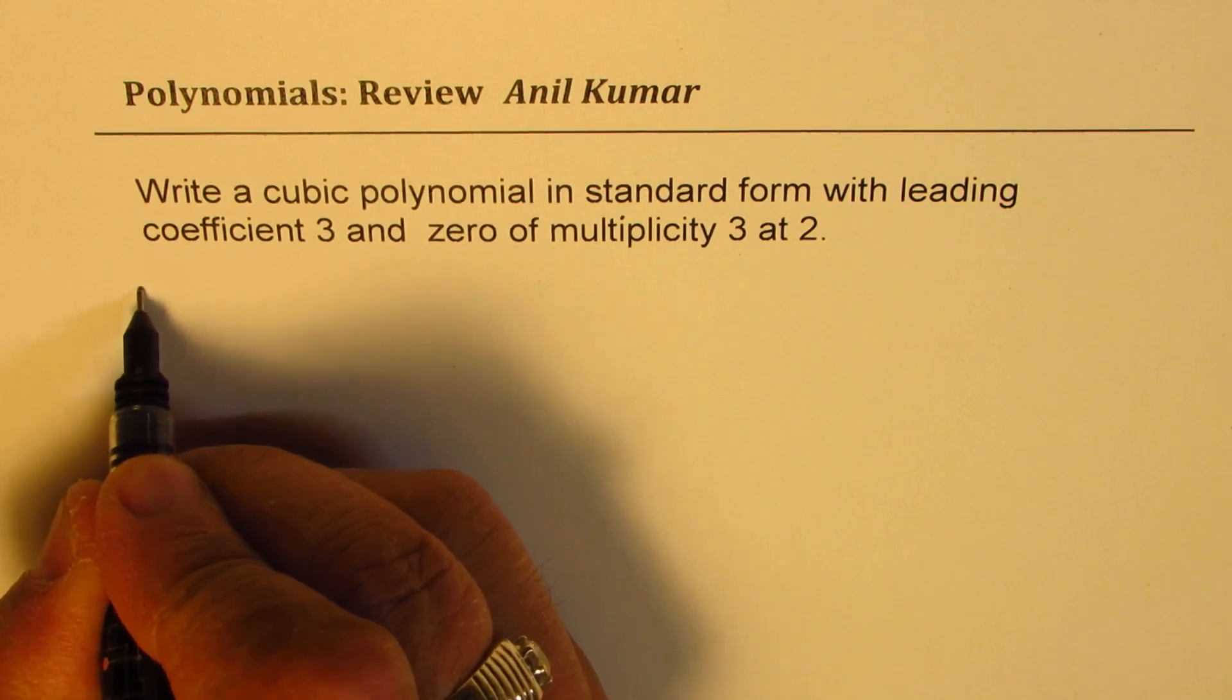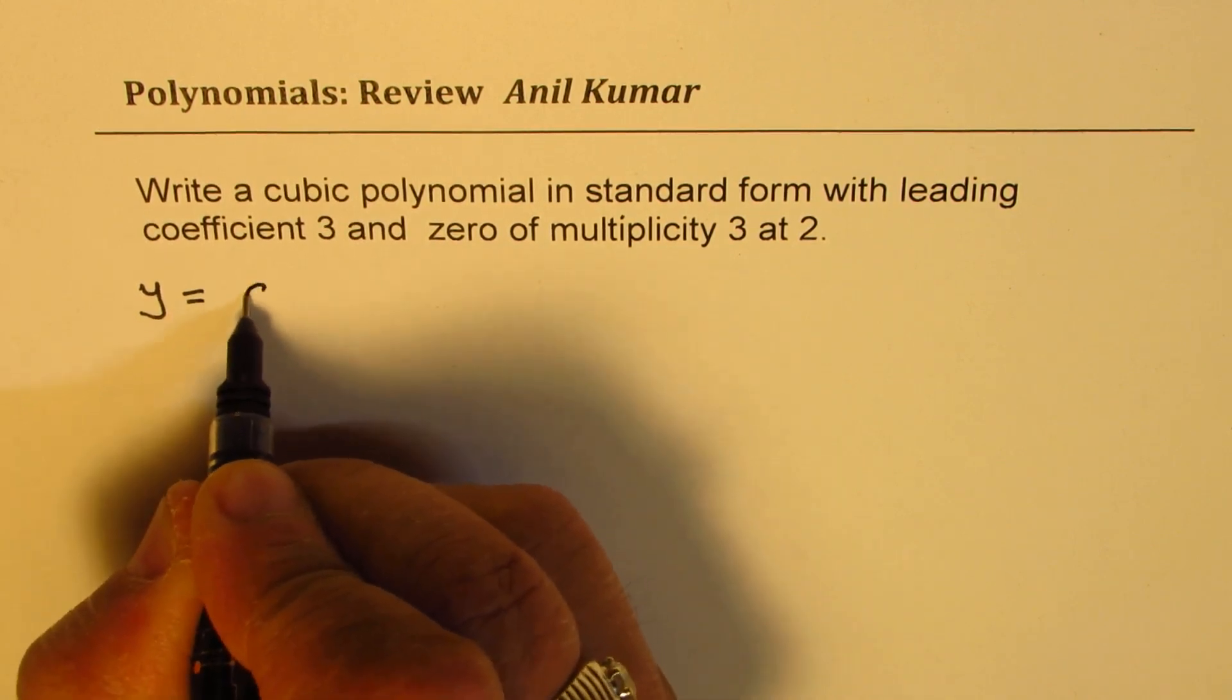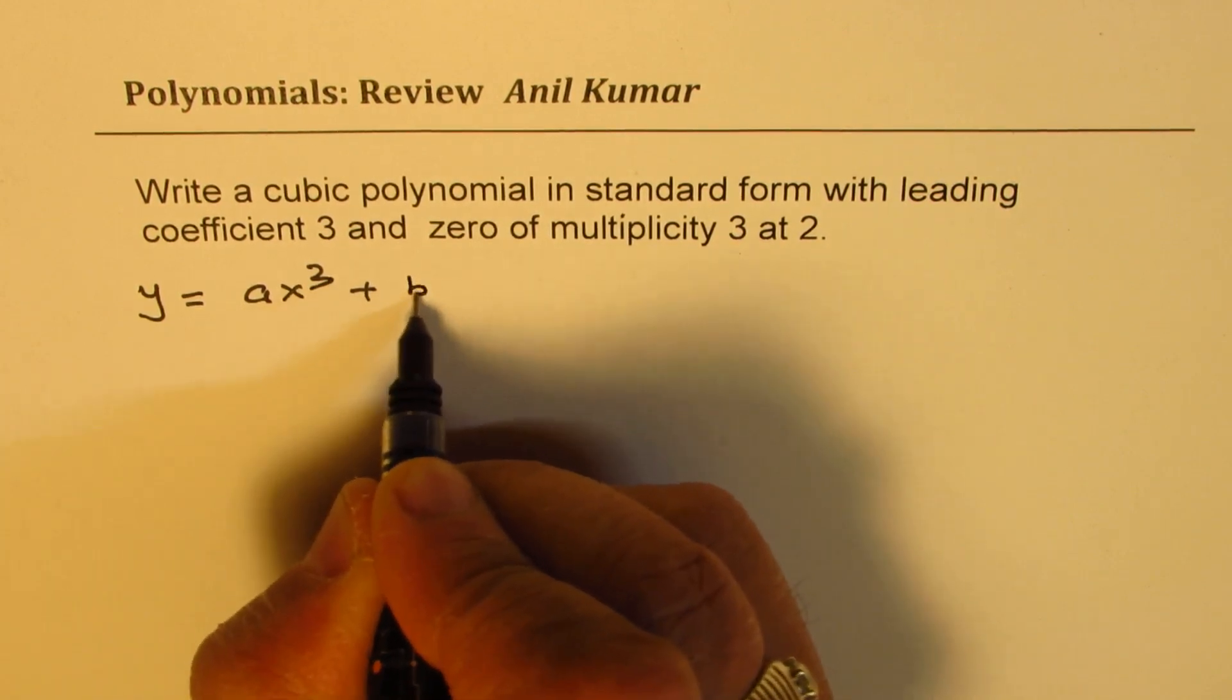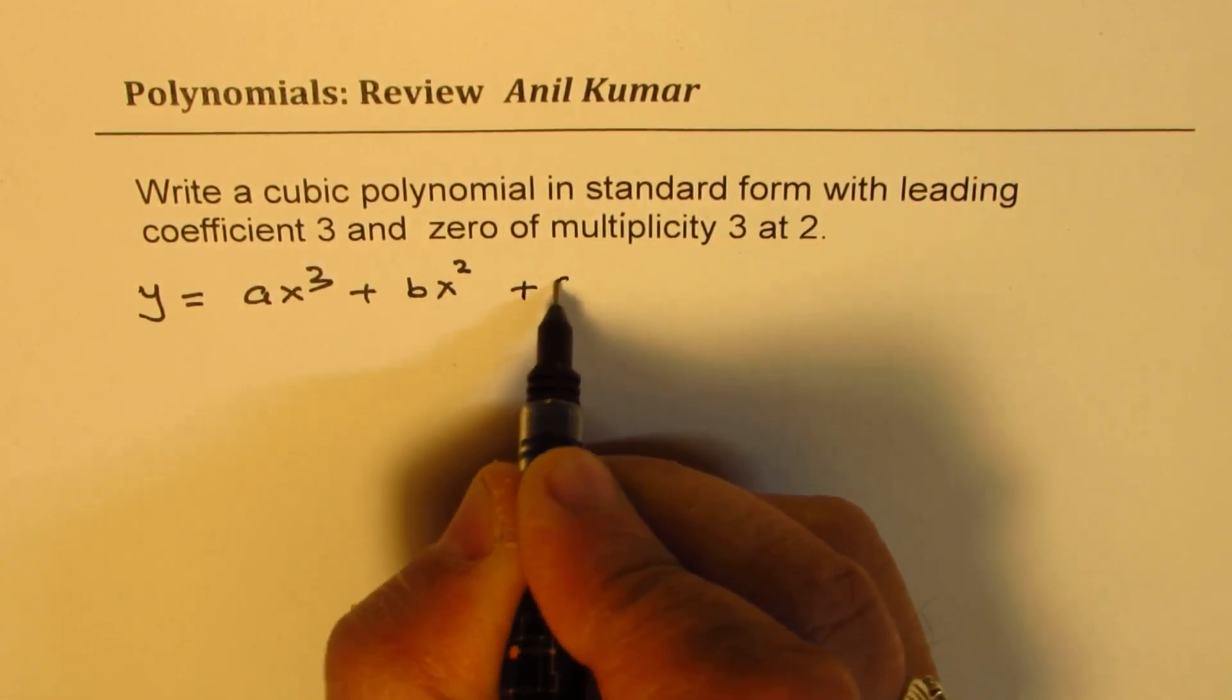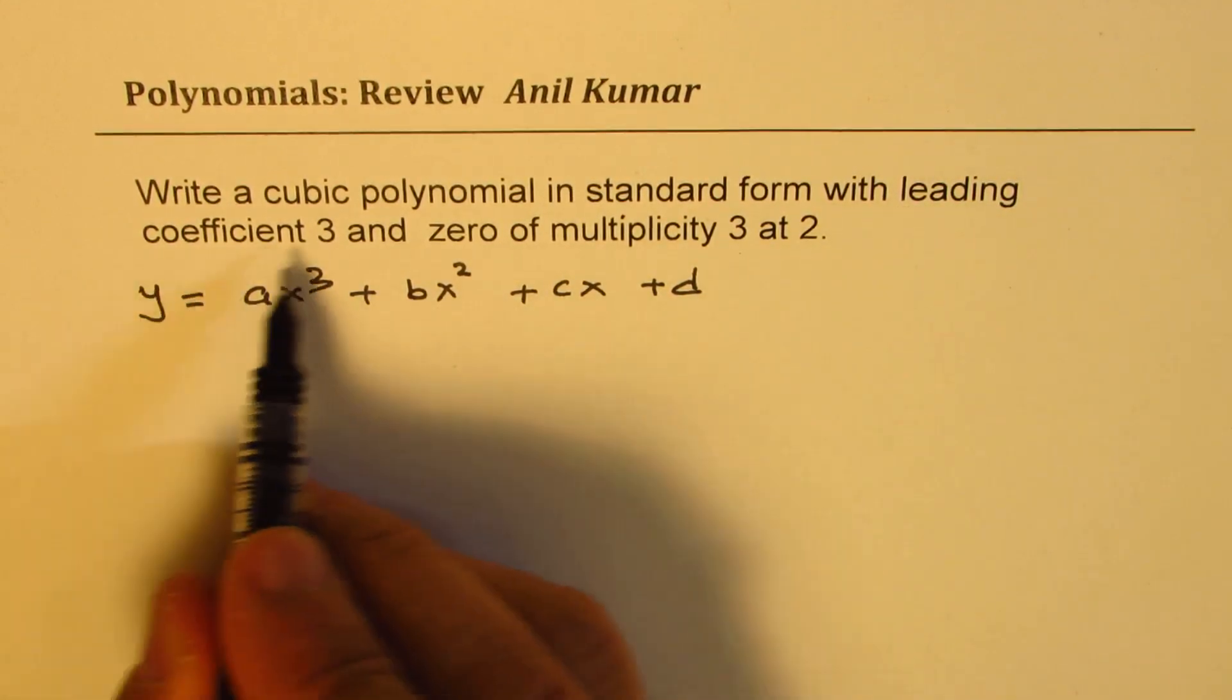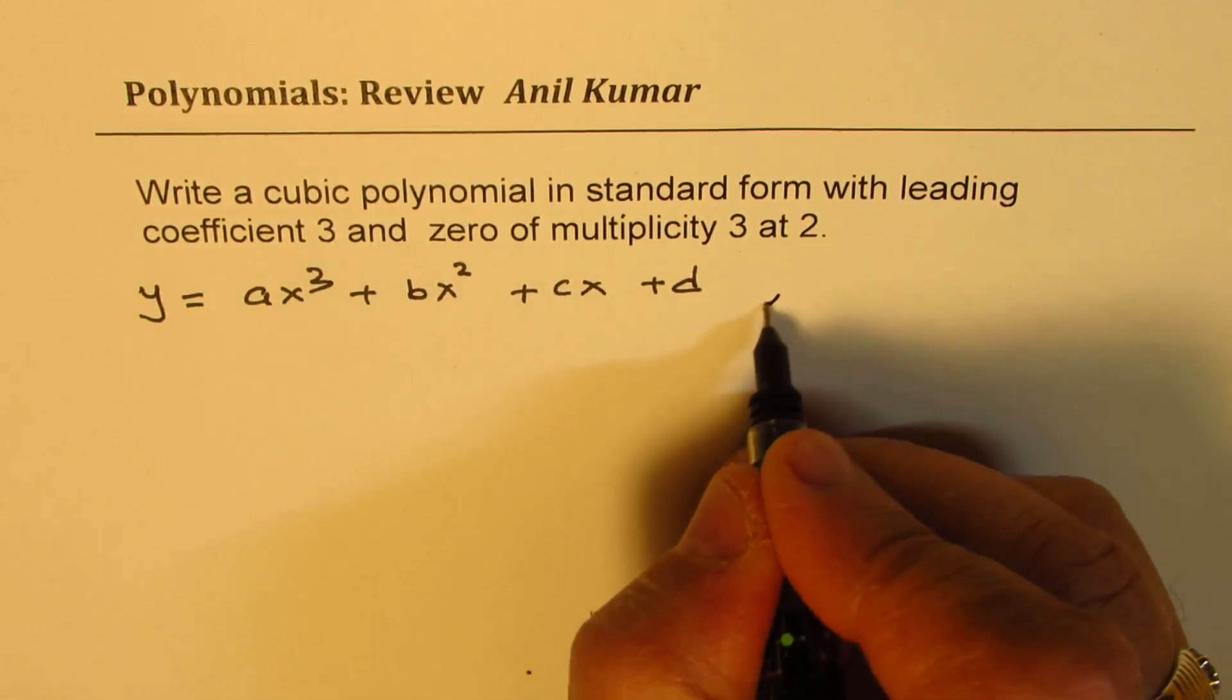When we say standard form, that means we have to write the function as y = ax³ + bx² + cx + d. What we are given here is that the leading coefficient is 3, that means a = 3.